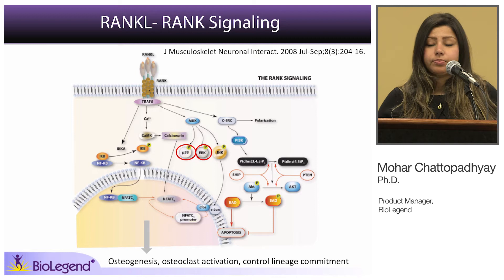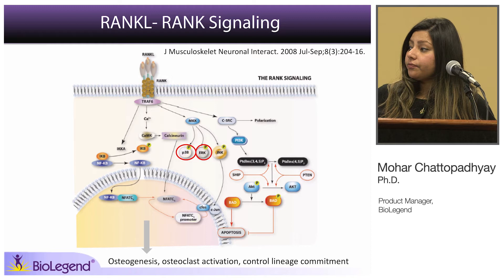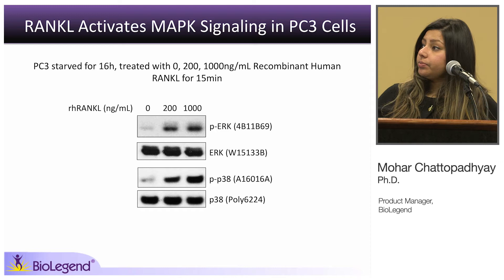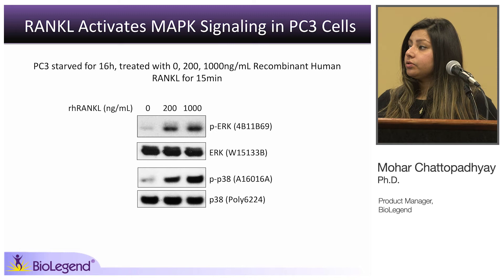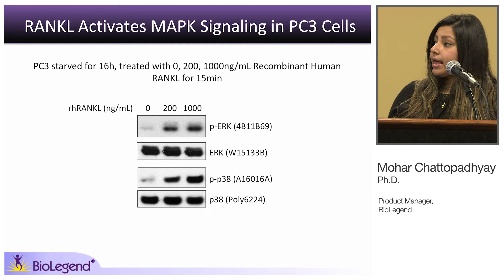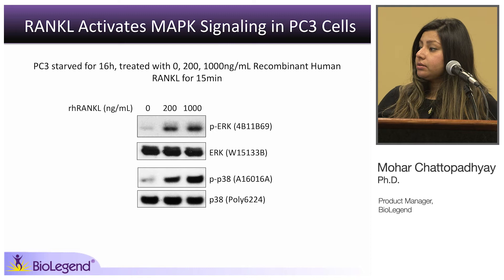We also examined RANKL-RANK signaling in cancer cells — some epithelial cancer cells express the RANK receptor. We looked at phospho-P38 and phospho-ERK by Western blot in PC3 prostate cancer cells starved for 16 hours and treated with increasing concentrations of recombinant human RANKL for 15 minutes. Even at 200 nanograms per mL, RANKL induced phosphorylation of ERK and P38, with a much higher induction at 1,000 nanograms per mL. Total ERK served as the loading control.